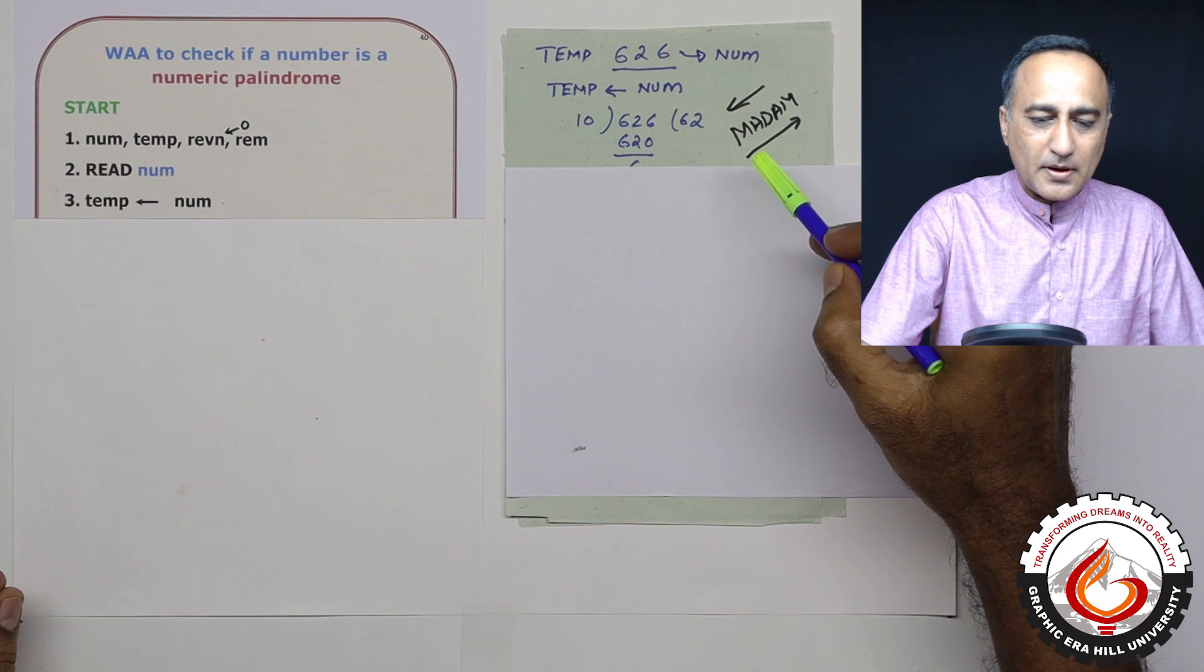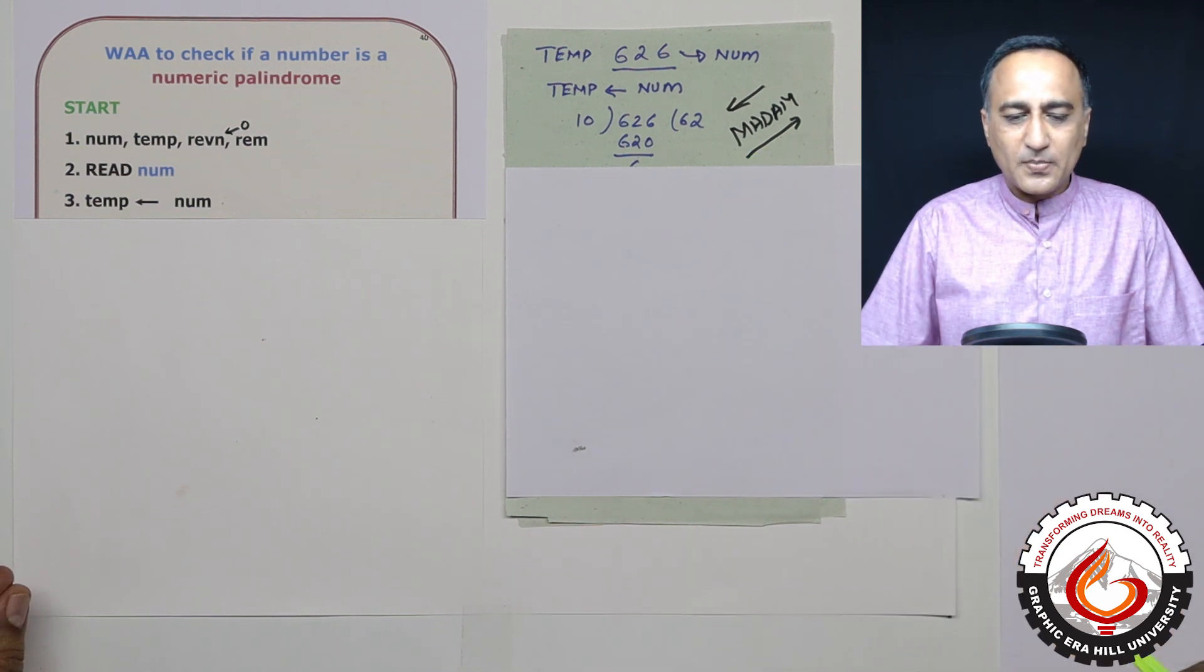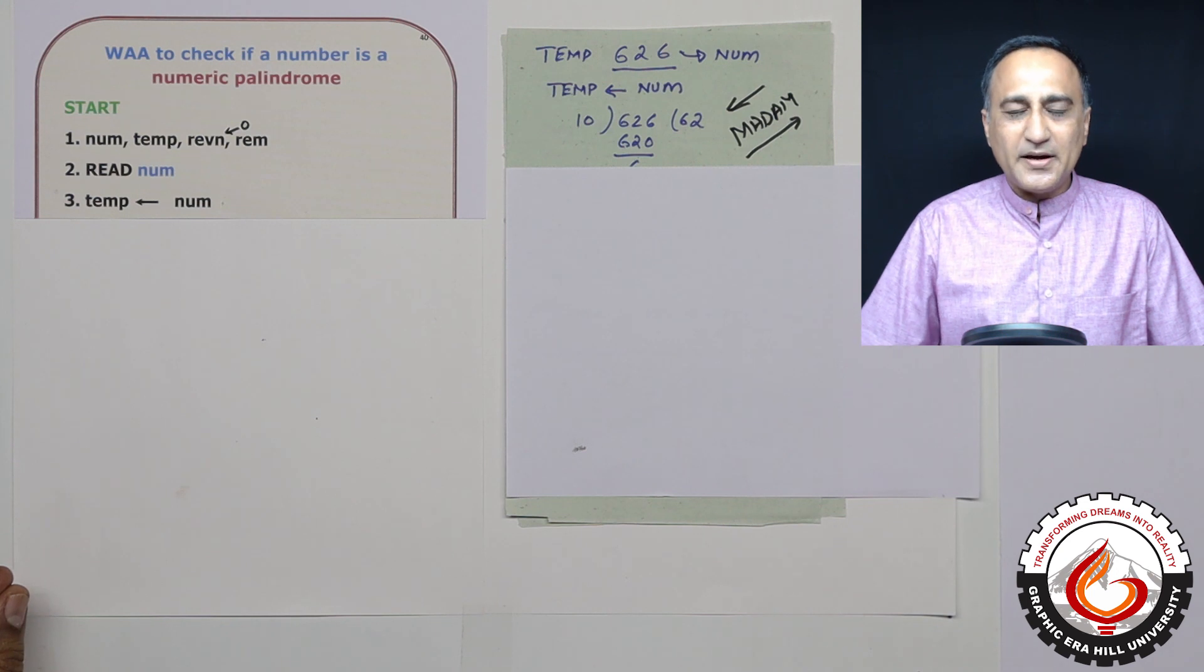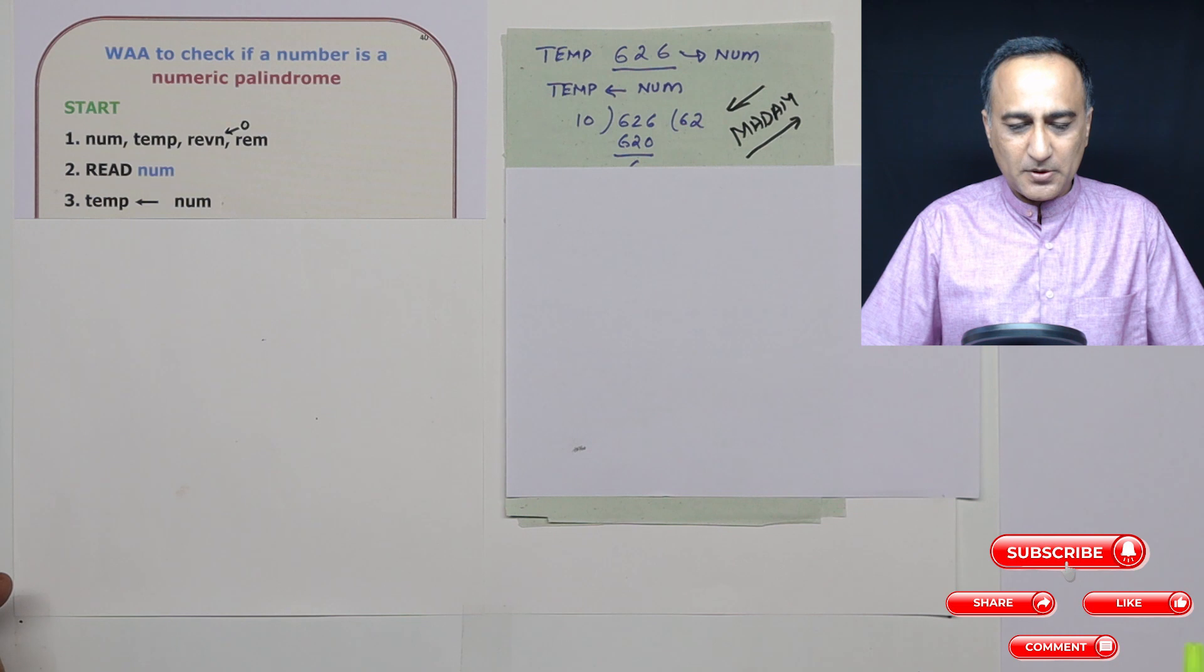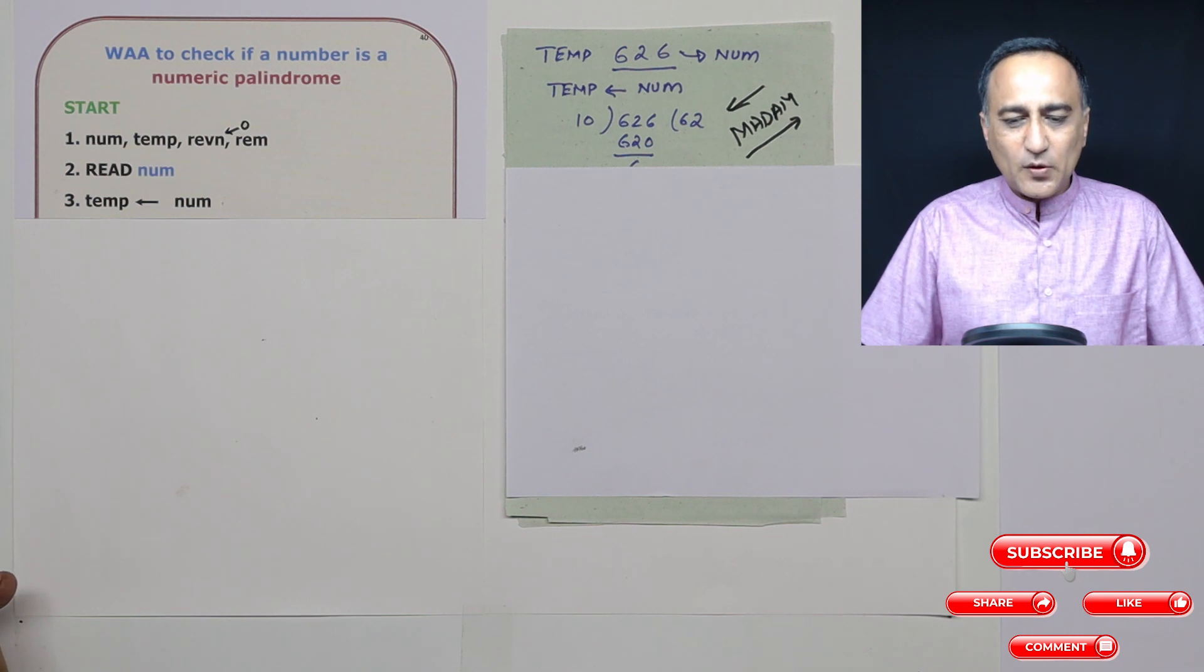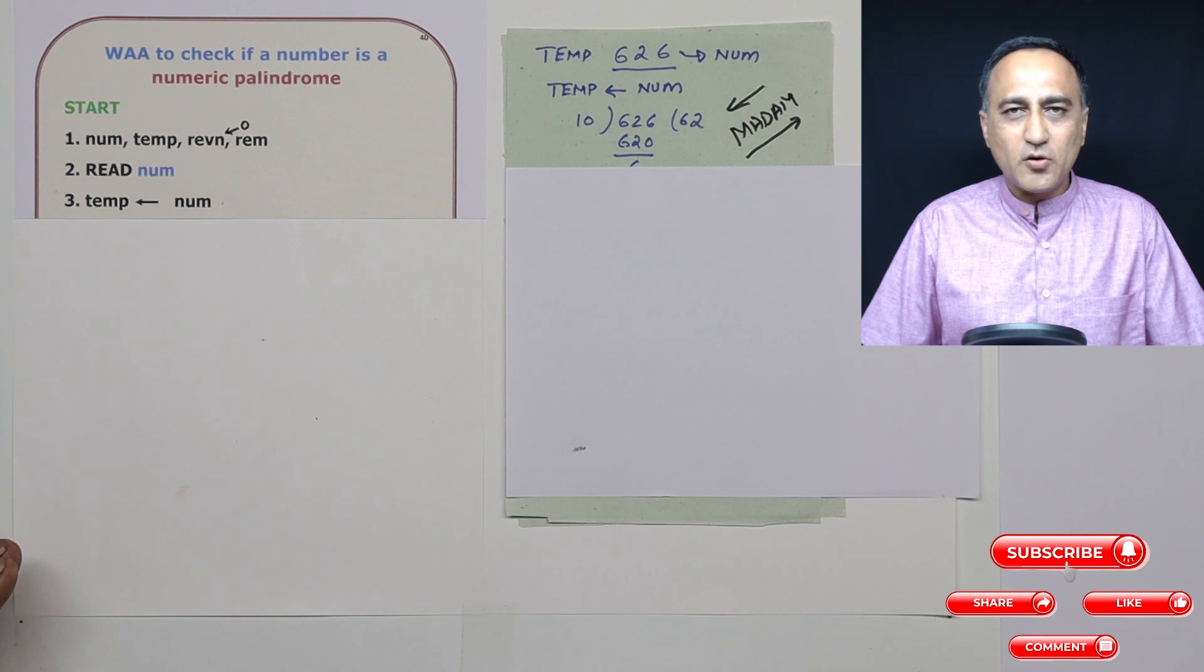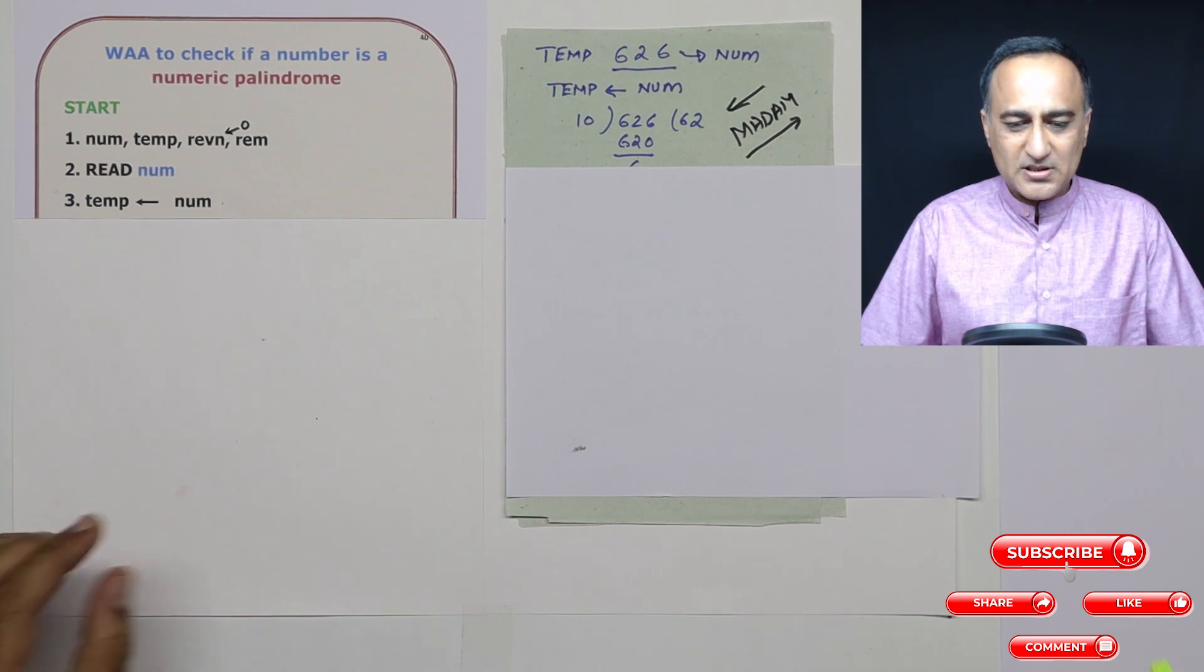So, if we have to determine if an input number is a numeric palindrome, we need to reverse that number and see if the original number is equal to the reverse. Let's take a look at the process first and then I will tell you how the algorithm logic is implemented.